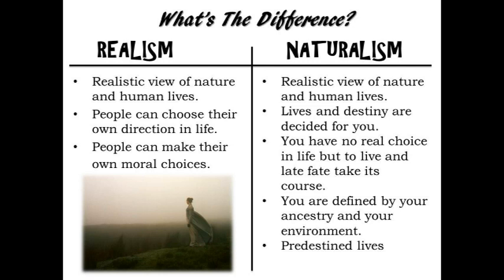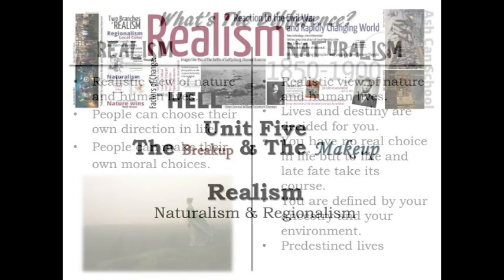The final branch of realism is naturalism, which often stumps students, so pay particular attention to this definition. These literary periods are often confused because they both portray nature and human lives as faithfully as possible. However, the realist believes that people can choose their own direction in life and make their own moral choices. The naturalist, on the other hand, believes they cannot. Naturalists see human life as determined by heredity and environment. The individual is trapped in a predestined life they cannot change, and the outcome is generally the worst case scenario, perhaps even death. A helpful way to think of it: the realist sees the glass as half full, and the naturalist sees the glass as half empty.